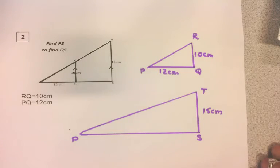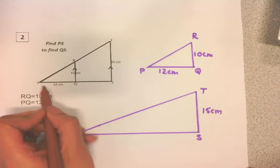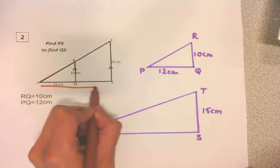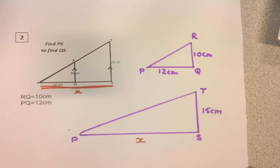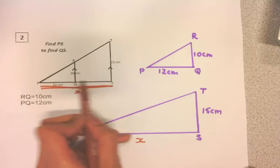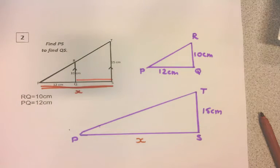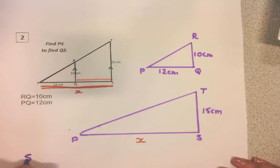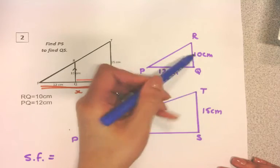What do I need to find? I need to find PS first—this is the length I need to find to eventually find QS. So let's find PS first. Because these shapes are similar, we're going to find the scale factor. The scale factor can be found by using corresponding lengths. I'm going to use the 15 and the 10—they're corresponding.